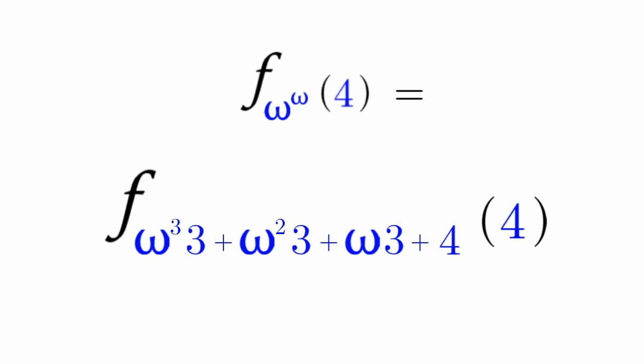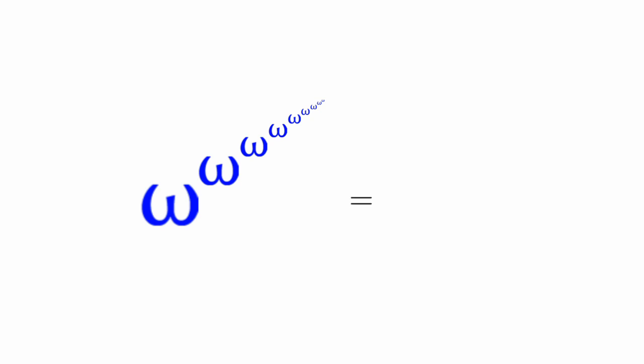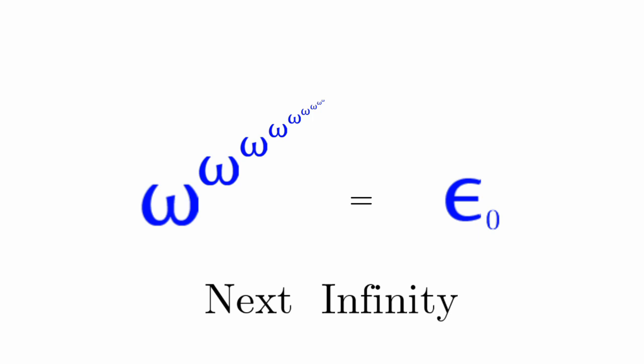But we can even go bigger. We can have omega to the omega to the omega — we can keep exponentiating omega. The limit of this is epsilon naught, which is our next infinite ordinal after omega.